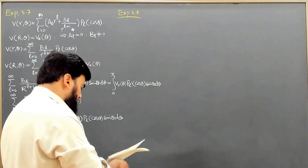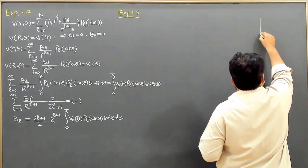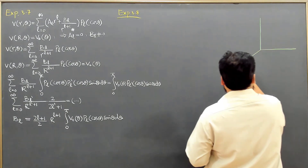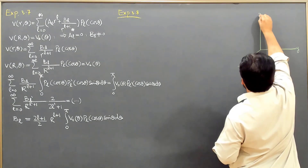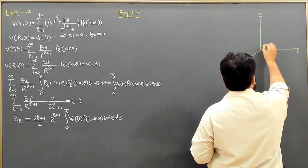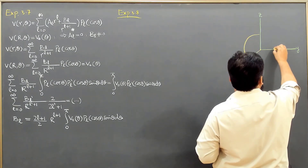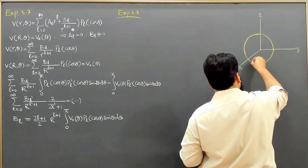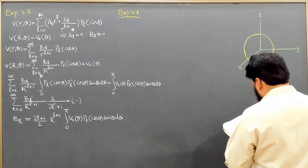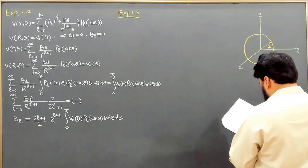Let me draw the field lines first and then the sphere. This is the x-axis, the y-axis, and the z-axis, and we have placed the sphere exactly at the origin. It is something like this configuration. Though I haven't plotted it very symmetrically, it is symmetric.